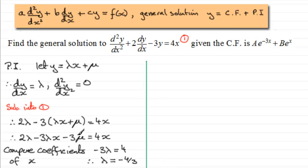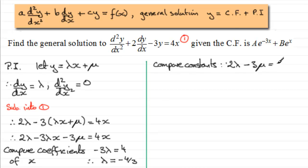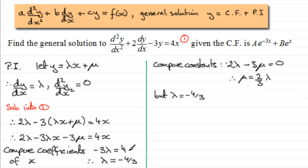Now we need to work out mu by comparing the constant terms. We have 2 lambda minus 3 mu equals zero, since there are no constants on the right-hand side. Rearranging gives mu equals two-thirds of lambda. Since lambda equals minus four-thirds, mu equals two-thirds times minus four-thirds, which equals minus eight-ninths.